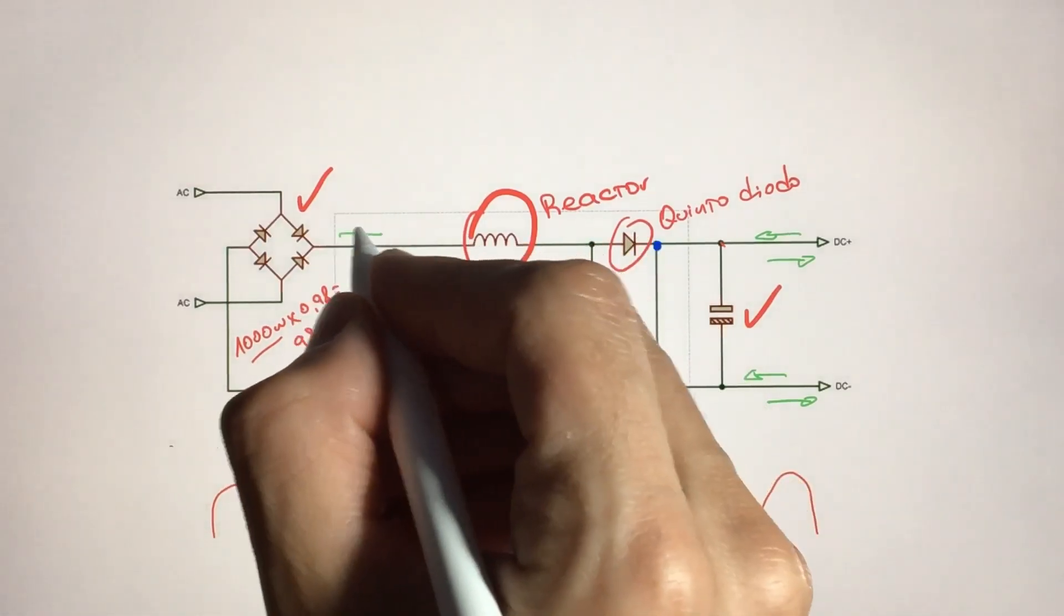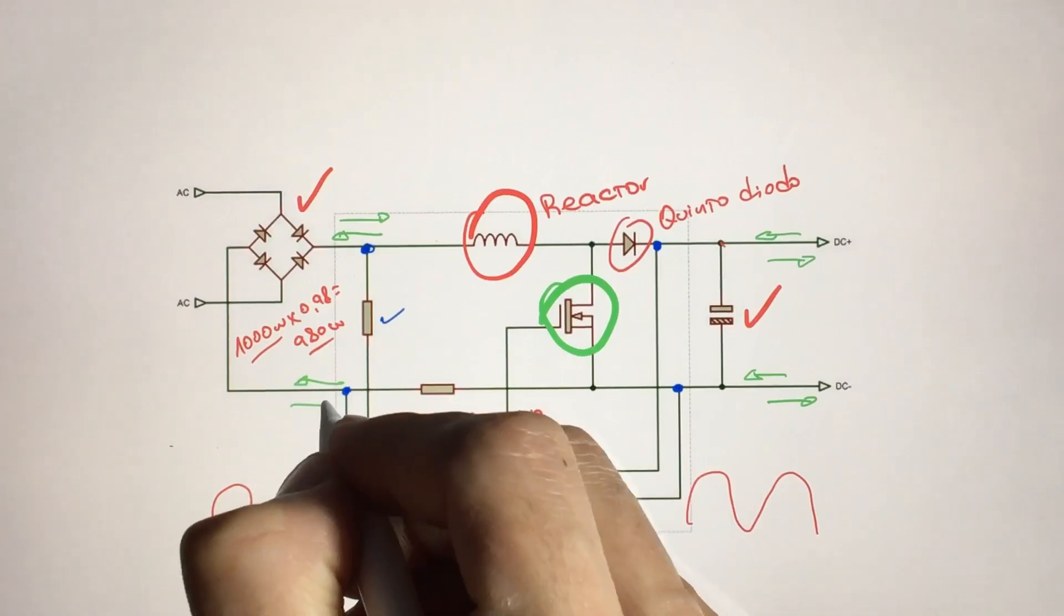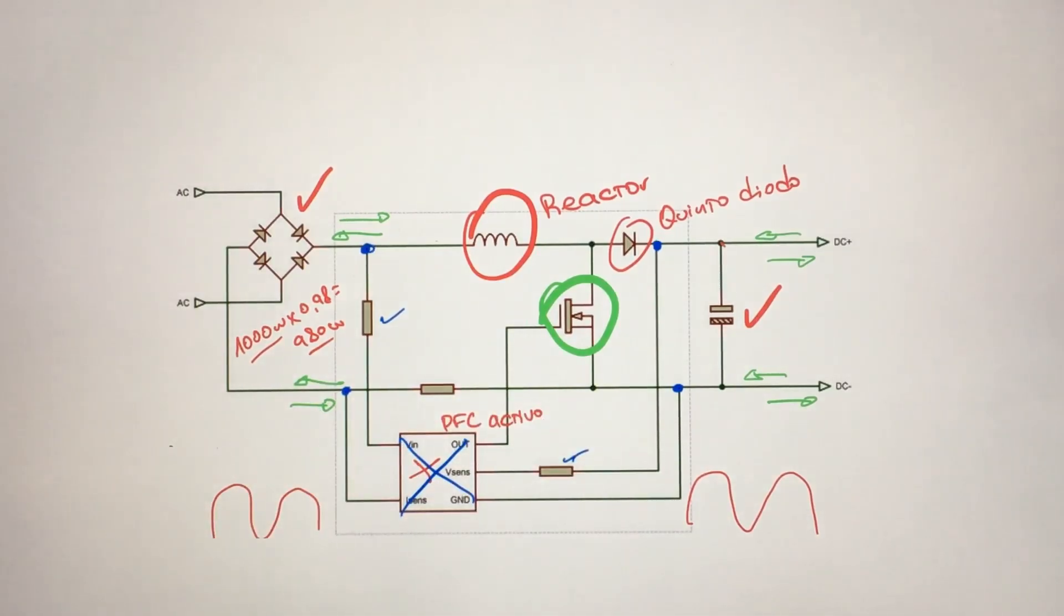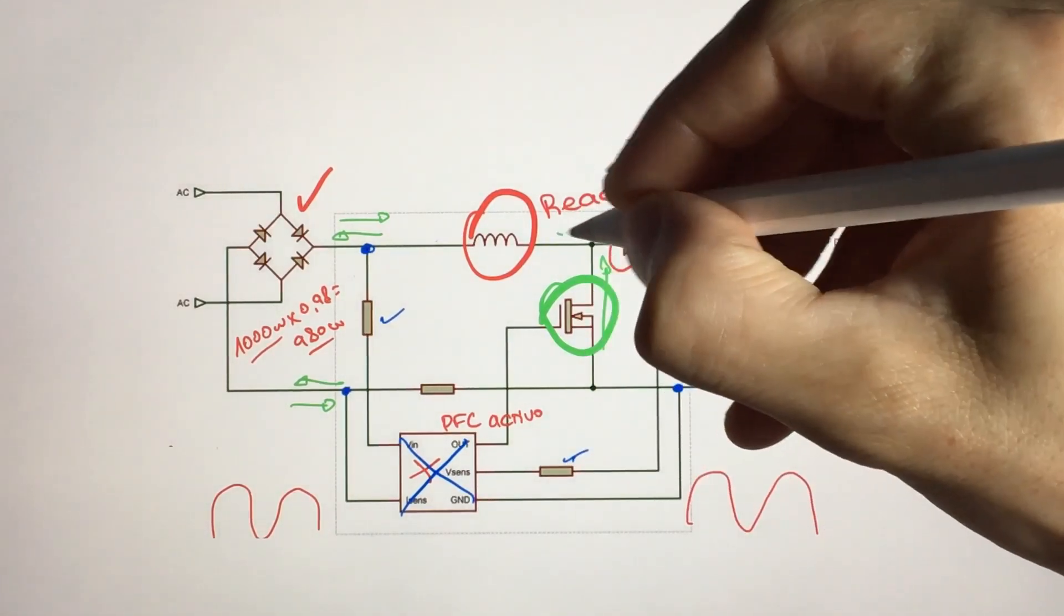It also knows what happens on the line—it knows if electrons go one way or another. If at any moment it detects that electrons are coming here and from this side they are coming here, what it's going to do is derive through the MOSFET so they go the other way.